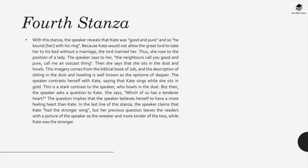Because Kate wouldn't allow the lord to take her to bed without marriage, he married her — and she became a lady. The speaker says: 'the neighbours call you good and pure, call me an outcast thing.' She sits in dust and howls — imagery from the biblical Book of Job representing the epitome of despair — while Kate sits in gold. But she asks Kate: 'which of us has a tender heart?' implying that while Kate had the stronger wing, the speaker herself had the more tender and true heart.